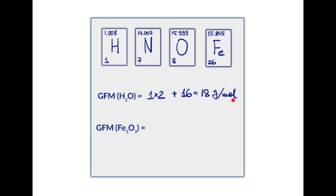One mole of iron(III) oxide is made out of 2 moles of iron atoms and 3 moles of oxygen atoms. The mass of 1 mole of iron is 56 grams, but we take it twice. The mass of 1 mole of oxygen is 16 grams, but we take it 3 times. The sum of these masses will be the mass of 1 mole of iron(III) oxide.